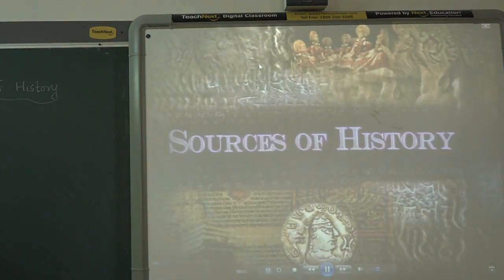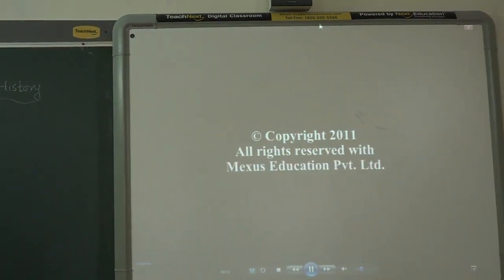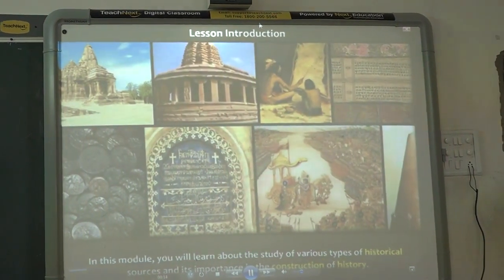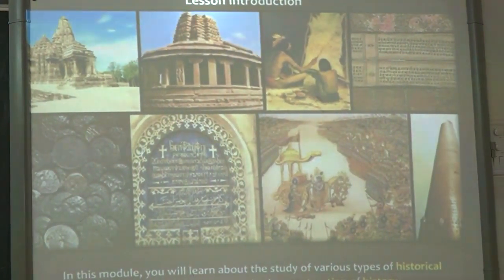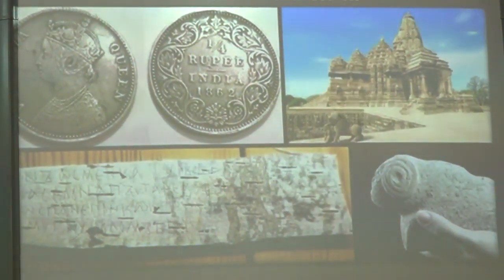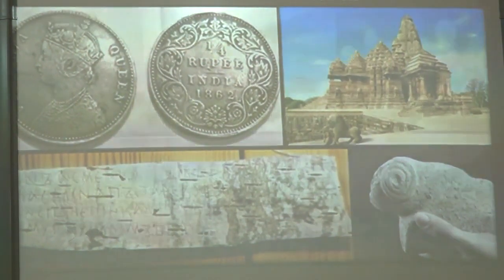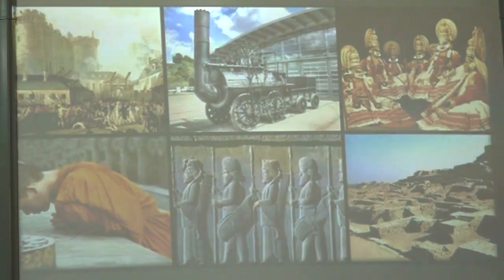The sources of history. In this module you will learn about the study of various types of historical sources and their importance in the construction of history. Historical sources are the foundation to understand a particular era back in time. They help us to gain knowledge about important events, inventions, cultures, civilizations, and many other aspects of our society. They serve as evidence in the construction of history.